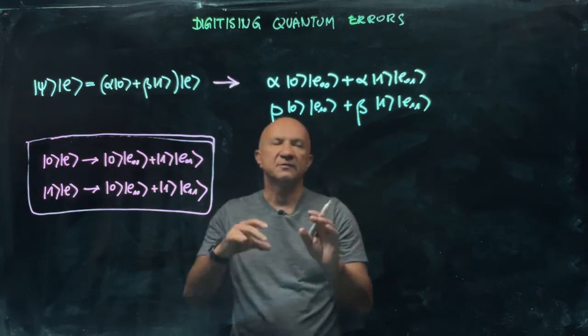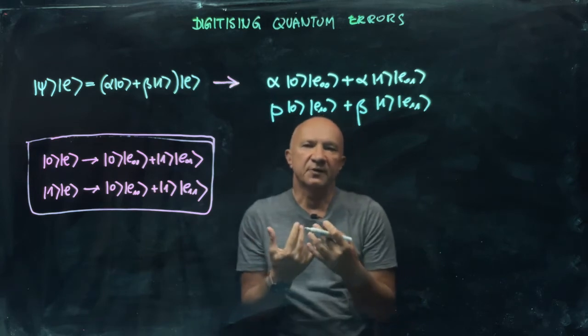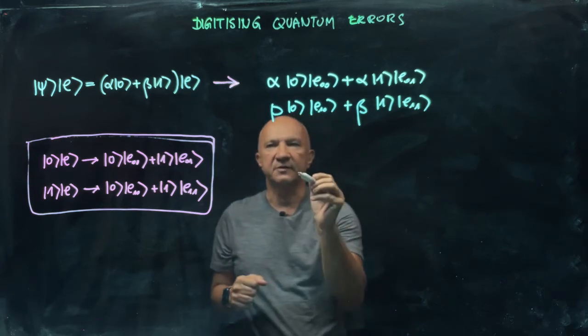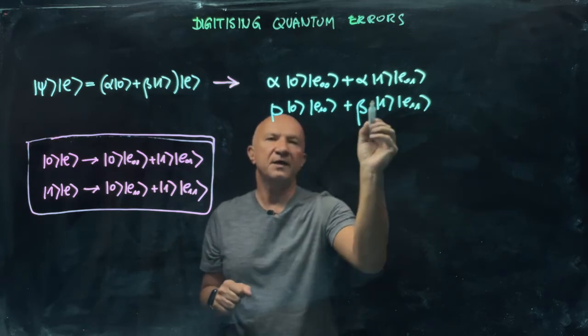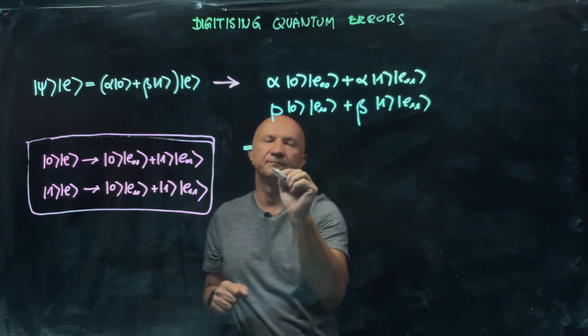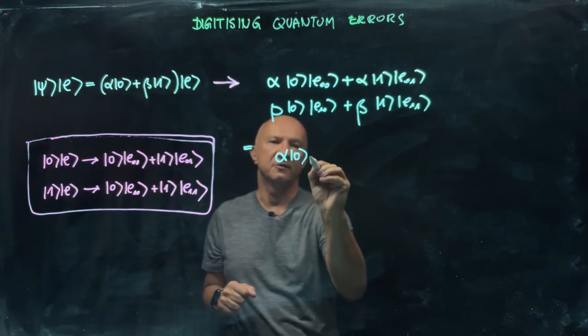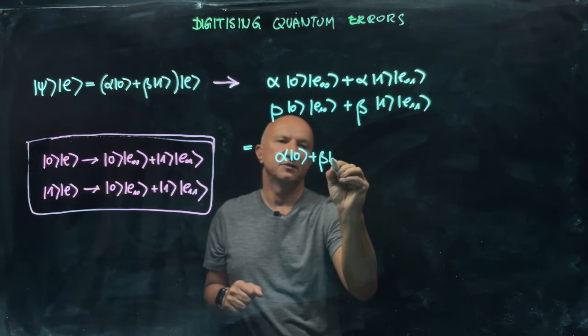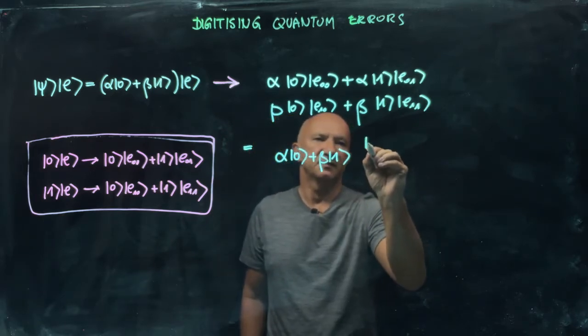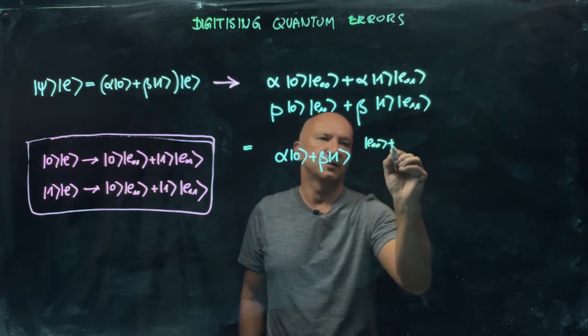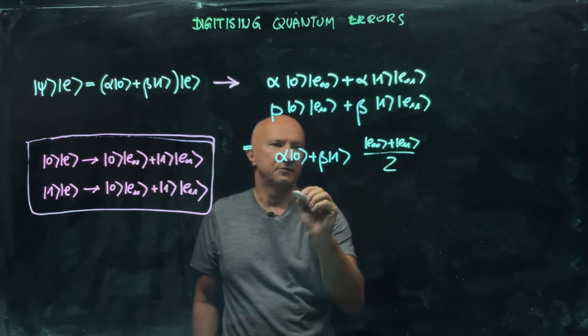The next interesting step is to rewrite this expression in a form that we can interpret. I'm going to rewrite this as follows: the whole thing equals alpha|0⟩ plus beta|1⟩, and here I'll have a state (|E0⟩ + |E1⟩)/2.